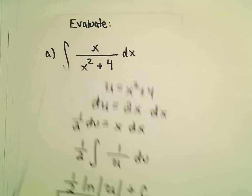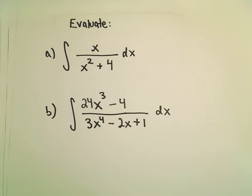Let's look at our other example here. We have 24x to the third minus 4 over 3x to the fourth minus 2x plus 1.